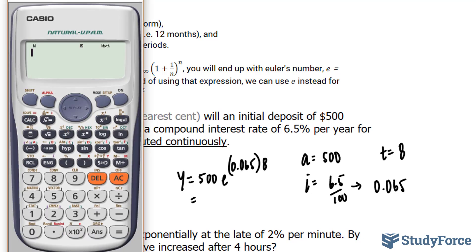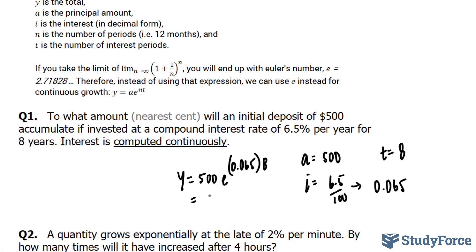Let's use our calculator to compute this. 500 times e, and that can be accessed by clicking alpha e to the power of 0.065 times 8, giving us 841.01. Since they want it to the nearest cent, we can disregard this one and simply write down $841.